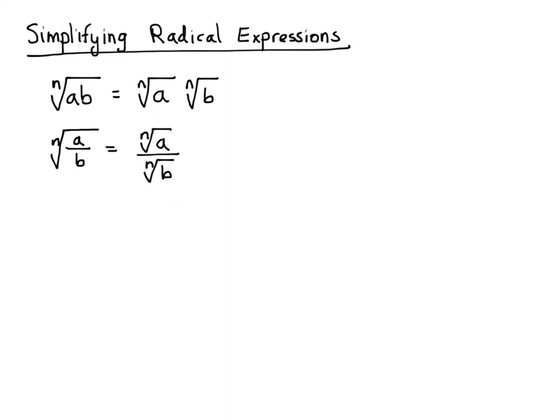For example, if we have the fourth root of 64 times 64, that's 2 to the 6th times 2 to the 6th, giving 2 to the 12th before we take the fourth root. In this case you combine everything before taking the fourth root, and you get a nice even number of factors to take out. You could also rewrite each 64 as a power of 2 and add the exponents — for instance, 2^6 times 2^6 gives 2^12 inside the fourth root.